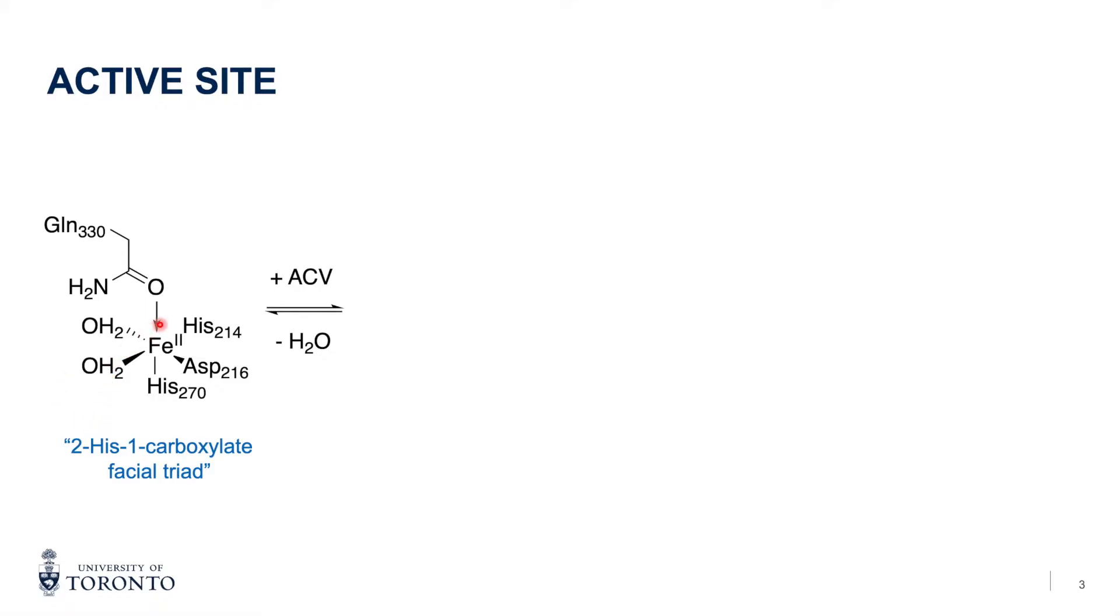two water molecules, and glutamine. These three ligands are called the 2-his-1-carboxylate facial triad, which is found in many non-heme iron 2 enzymes. It anchors the iron in the active site and maintains three vacant sites where other ligands or substrates can bind.